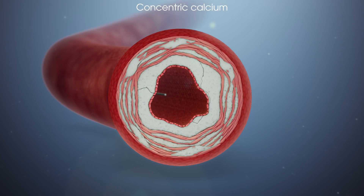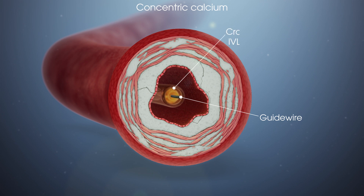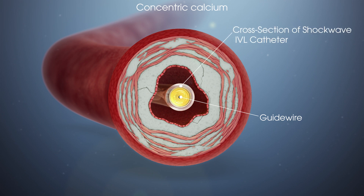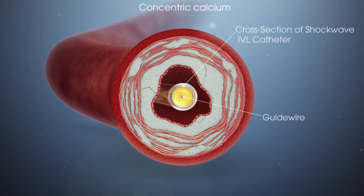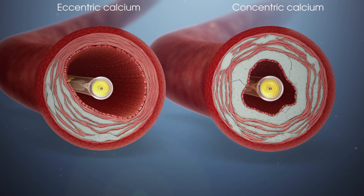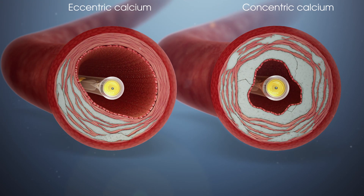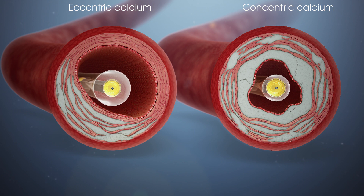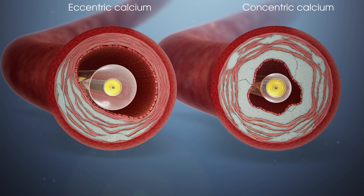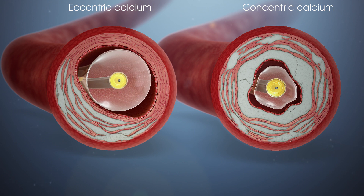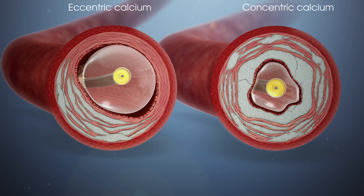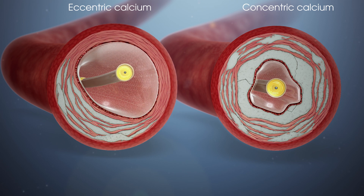Depending how calcium presents, the number of IVL pulses to achieve an optimal result are different. When the IVL balloon expands in eccentric calcium, the emitter moves away from the calcium since the soft tissue is not constrained.